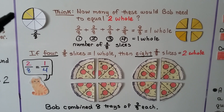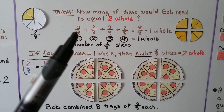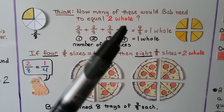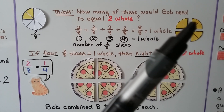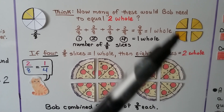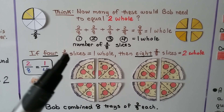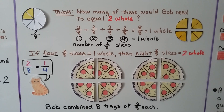If we have 2/8-size pieces — here's 1/8 and 1/8, that's 2/8 — how many of these would Bob need to equal 2 whole? We have 2/8 + 2/8 + 2/8 + 2/8 equals 8/8. We have like denominators, so we just add the numerators: 2+2+2+2 equals 8. We have 8/8, which equals 1 whole pizza. So 4 groups of 2/8 equals 1 whole. Then 8 groups of 2/8 equals 2 whole. That means Bob combined 8 trays of 2/8 each.